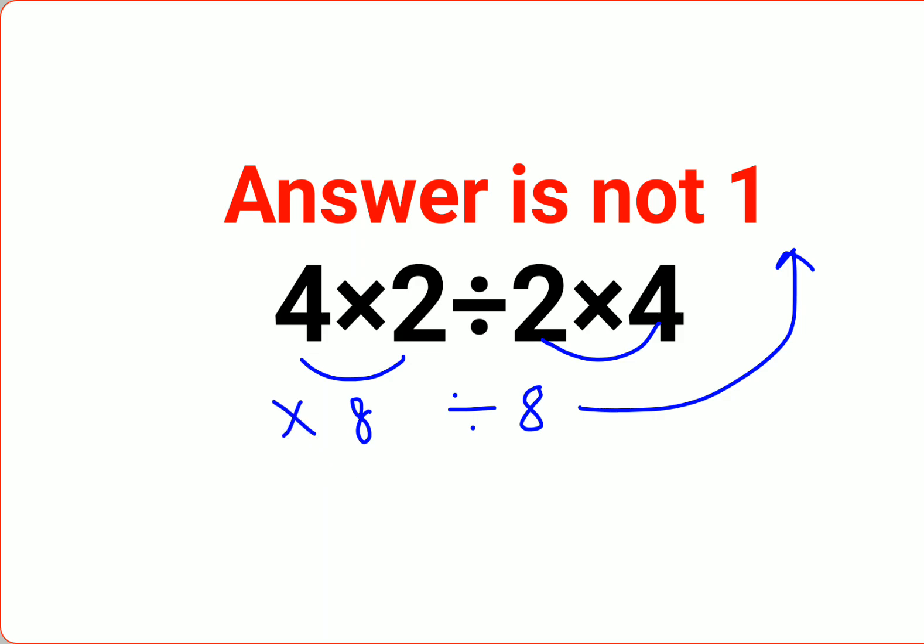That is incorrect. The reason for that is in any sum which has division and multiplication, always remember they hold equal precedence no matter whether you are following PEMDAS or you are following BODMAS. They hold equal precedence. So in sums like these you just have to go from left to right.